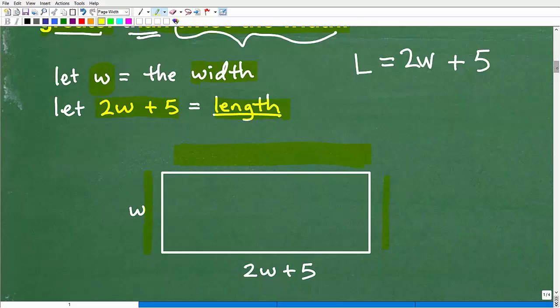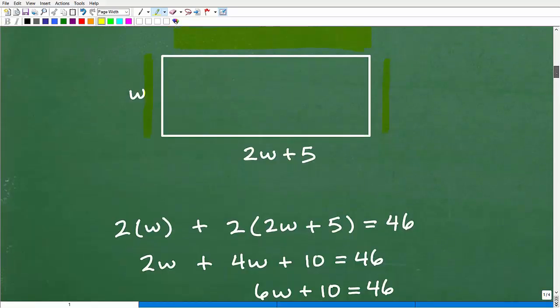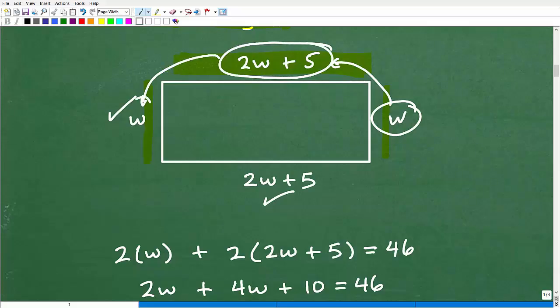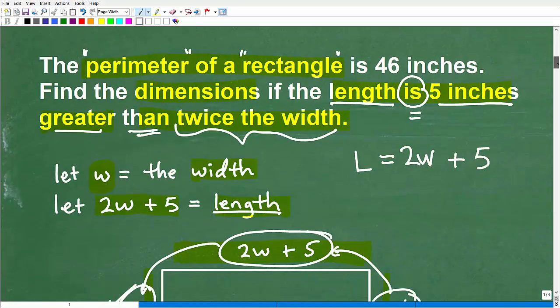Now we're ready to figure out what the perimeter is. We've got to know by definition what is the perimeter. It's this side plus this side plus this side plus this side. And we know by definition that if this is the width over here, whatever measurement this is, it's the same thing over here. And over here, this length is also going to be 2w plus 5.